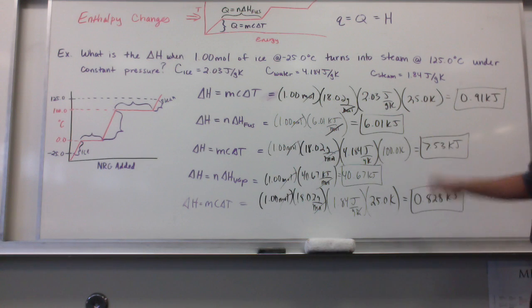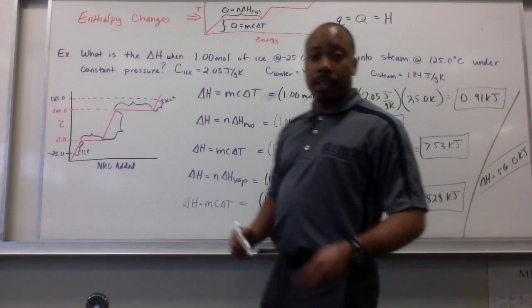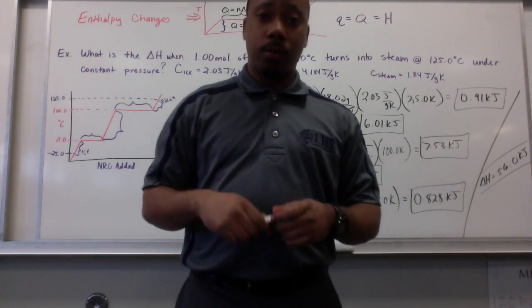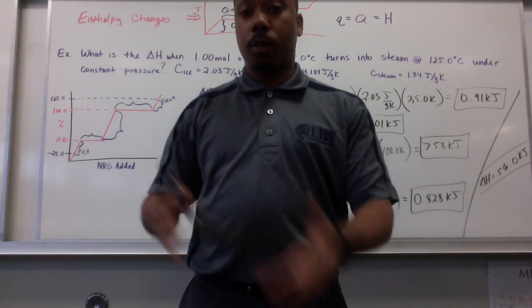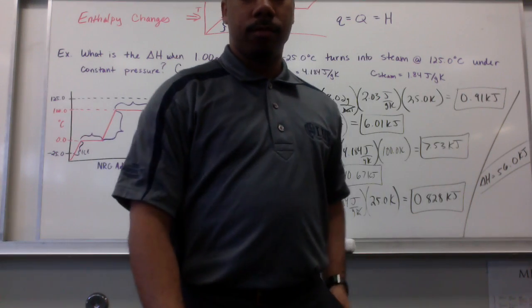And, those are all the heats of this process. Now, we simply add them all up. And, the overall delta H is 56.0 kilojoules around that mark there. Gentlemen, please take notes on this. Keep track of this. Welcome back to enthalpies in terms of phase changes. Adios.